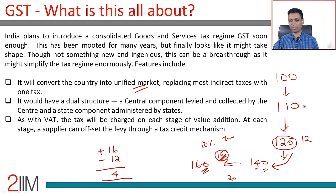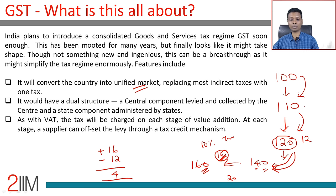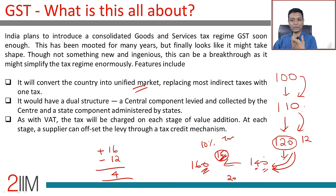Likewise, each person in the chain does the same thing — paying 10% only on the value added at each step: 10% of ₹10, then 10% of ₹10, then 10% of ₹20. So you effectively end up paying only for the value you have added, not for the full transaction price. That is the system, the ideal.